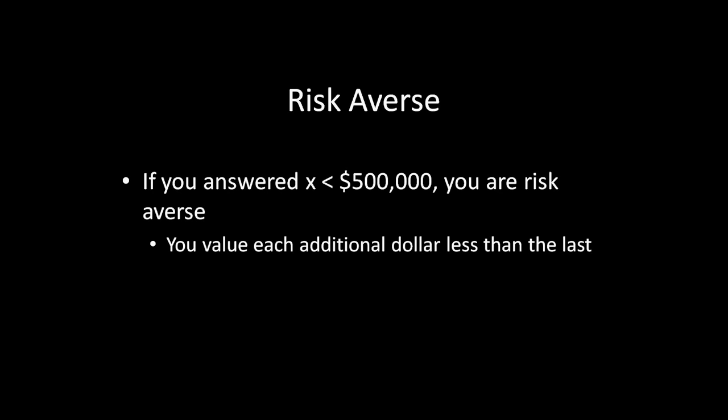Lots of people exhibit risk-averse behavior in the real world. Think about insurance — insurance lives on risk aversion. Every time you buy insurance, whether it's medical, car, or homeowners insurance, you're going to be losing money in expectation. But that doesn't mean insurance is a bad bet. You willingly pay this loss because there are some catastrophic outcomes — if you crash your car, if your house burns down, or if you get cancer. You want to avoid having really serious consequences that you are unable to pay for. So you buy insurance to smooth your outcome. Yeah, you lose money in expectation, but you make these really bad outcomes look not so bad.